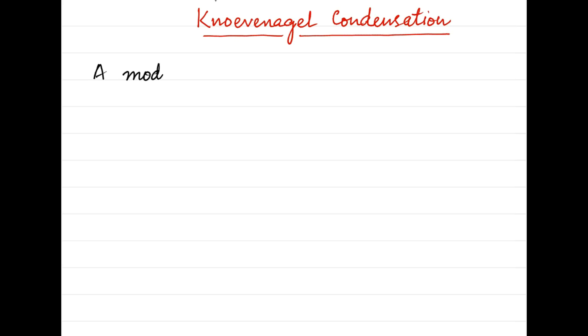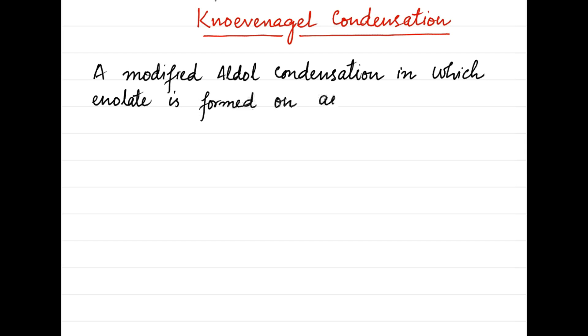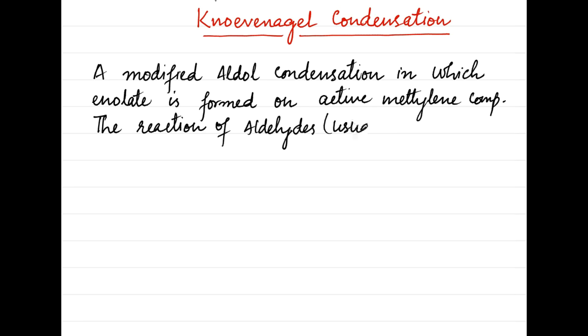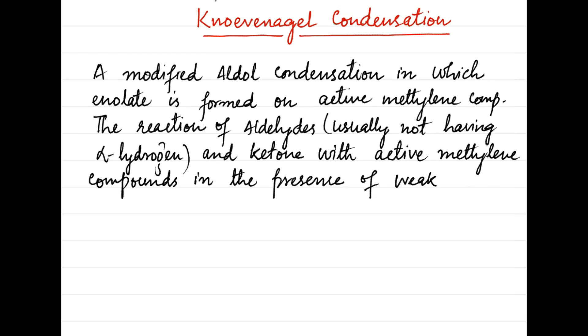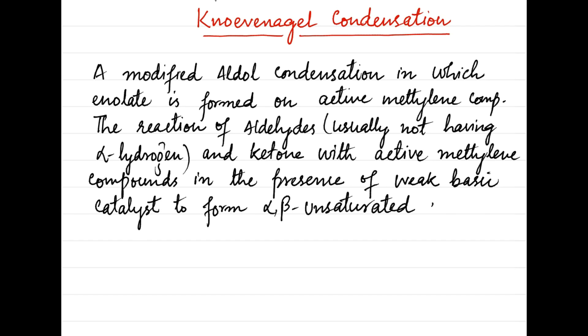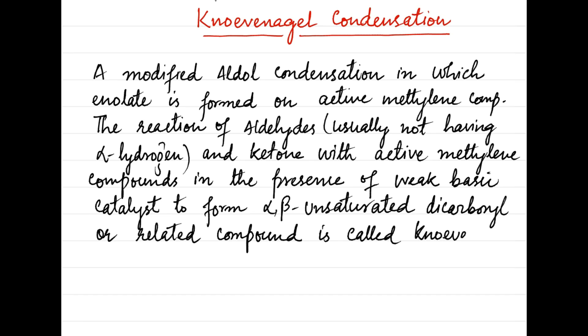In this lecture, we will discuss Knoevenagel condensation. This is a modified aldol condensation in which an enolate is formed on an active methylene compound. The reaction of aldehydes, usually not having alpha-hydrogen, and ketones with active methylene compounds in the presence of a weak basic catalyst to form alpha,beta-unsaturated dicarbonyl or related compounds is called the Knoevenagel reaction.